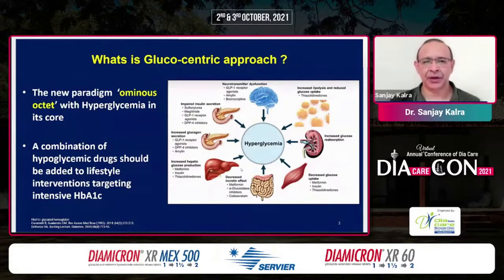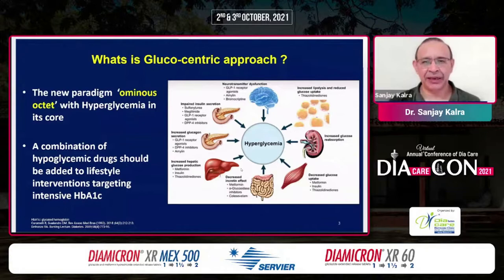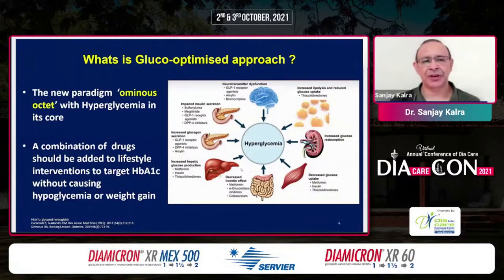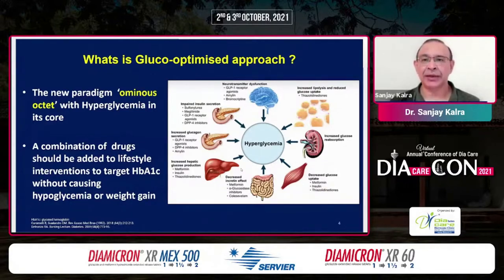Look at the terminology. A combination of multiple drugs — hypoglycemic drugs, drugs causing hypoglycemia — should be added to lifestyle interventions, targeting intensive HbA1c. We needed HbA1c as low as possible. There were issues with this definition and approach. Now look at the subtle change in semantics: from glucose-centric, we go to gluco-optimized. We need to optimize glucose management. A combination of drugs should be added to lifestyle interventions — because lifestyle modification is treatment number one — to target HbA1c, still our main target, without causing collateral damage, without causing hypoglycemia or weight gain. This is a gluco-optimized approach.